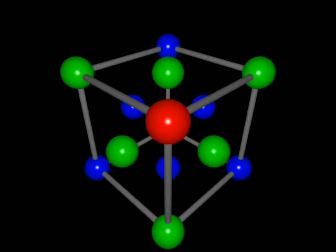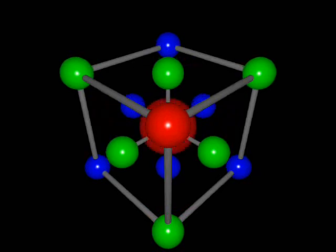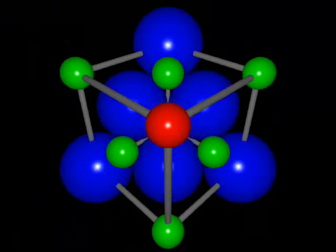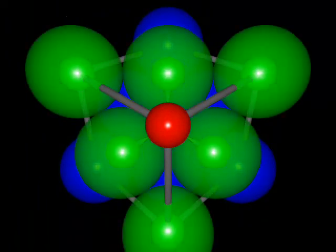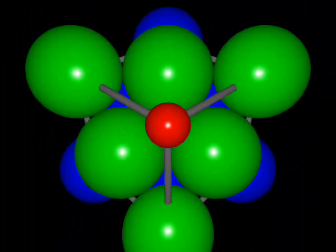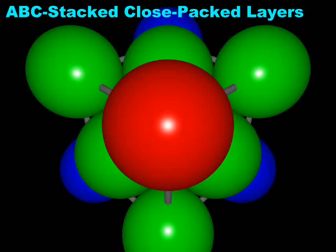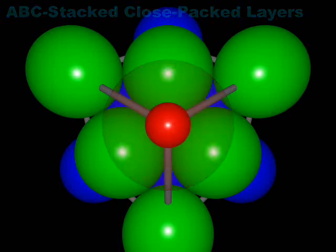so that the fourth layer lies over the first layer, the fifth layer lies over the second layer, and so on. Here we use color to represent the three close-packed layers in the face-centered cubic lattice.